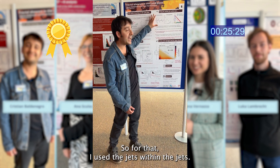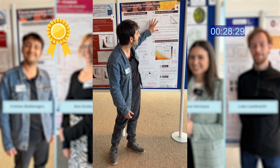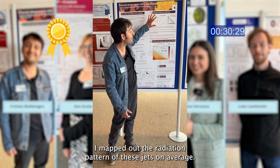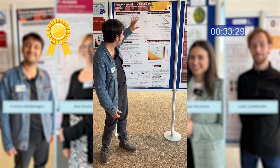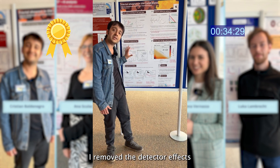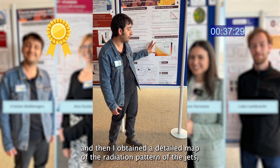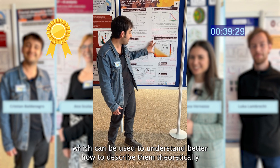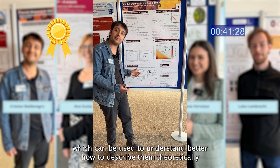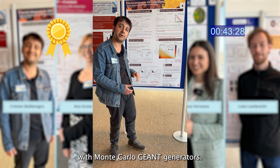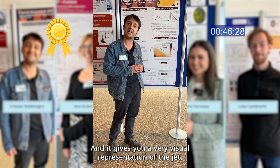For that I use jets within jets. I map out the radiation pattern of these jets on average, remove the detector effects, and then obtain a detailed map of the radiation pattern of the jets, which can be used to better understand how to describe them theoretically with Monte Carlo event generators. It also gives a very visual representation of the jet.